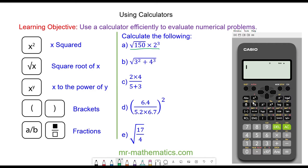On our scientific calculator we press the square root button, we enter 150, and then we move out of this operation by pressing the right button, multiply by 2 and then cubed.